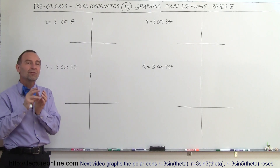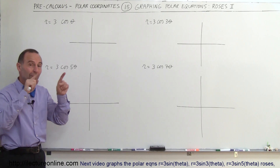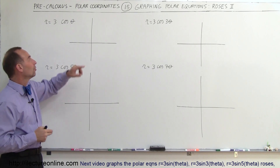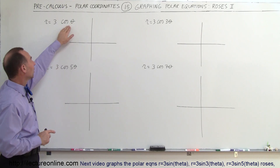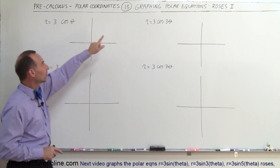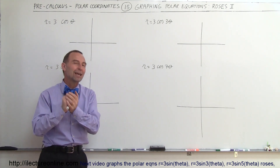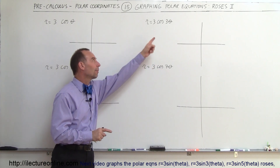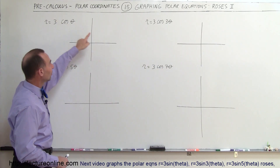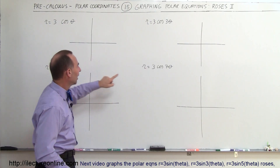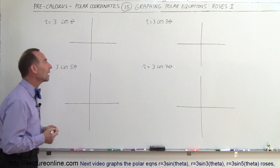In the case of the cosine of an even angle like 2 theta, 4 theta, 6 theta, and so forth, the number of leaves is twice the number in front of the theta. But in the case of odd angles — cosine of 1 theta, cosine of 3 theta, 5 theta, and 7 theta — there's the exact same number of leaves as the number in front of the theta. So here you'll have 1 leaf, 3 leaves, 5 leaves, and 7 leaves, evenly spread out over a 360-degree angle.